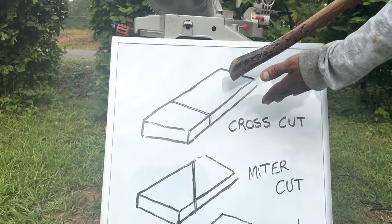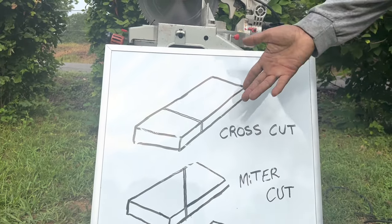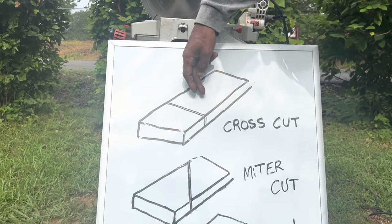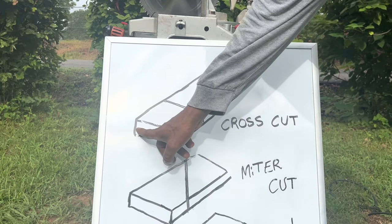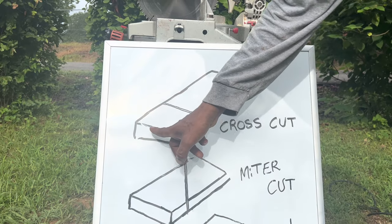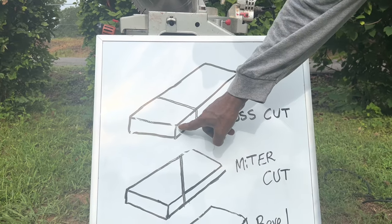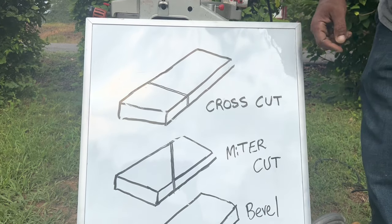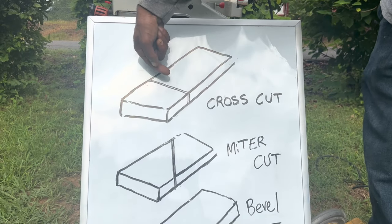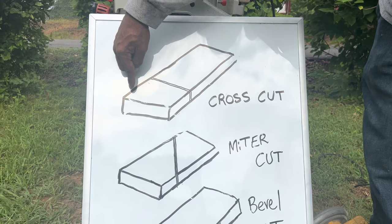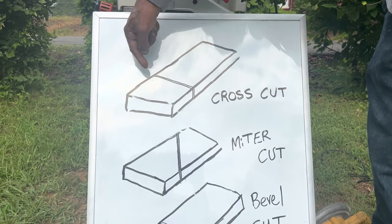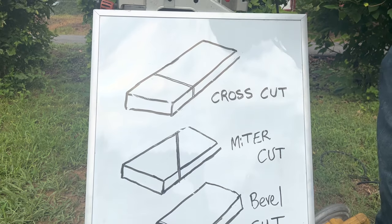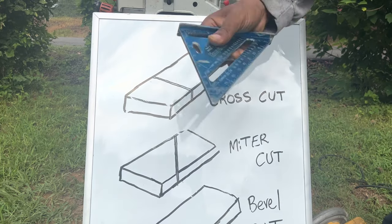If you look at this lumber — let's say this two by four — this is the face of my lumber right here. This is my end grain right here, and this section right here is my edge grain. This is called a cross cut because you have a 90 degree angle based off this edge, going across the face of your lumber and through the edge of your lumber.